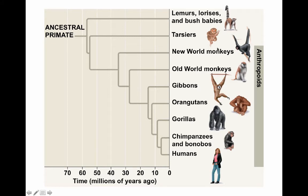We still use the term 'monkey' for non-ape anthropoids. Then we see the gibbons, orangutans, gorillas, chimpanzees, and bonobos, and then humans. Humans are most closely related to chimpanzees and bonobos, and least closely related in this phylogeny to the lemurs, lorises, and bush babies.